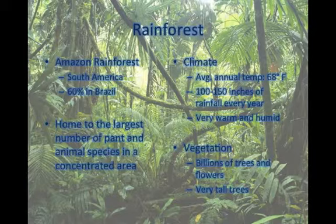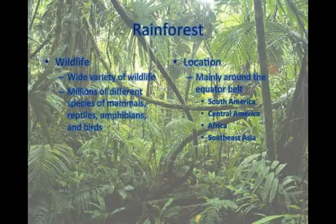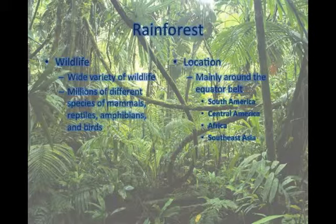The rainforest is very warm and humid. There are billions of trees and flowers that grow in the rainforest, and these trees tend to be very tall. The rainforest is home to a wide variety of wildlife, including millions of different species of mammals, reptiles, amphibians, and birds. The rainforest can be found mainly along the equator belt, such as South America, Central America, Africa, or Southeast Asia.